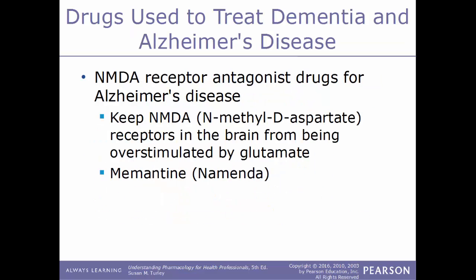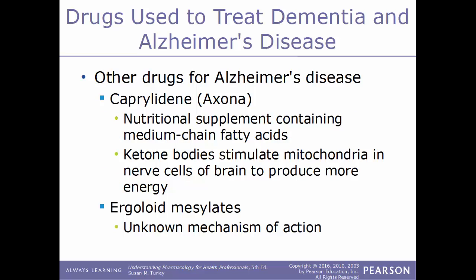Another class used to treat dementia and Alzheimer's are NMDA receptor antagonist drugs. These keep NMDA receptors in the brain from being overstimulated by the amino acid glutamate. An example is memantine (Namenda). Other drugs for Alzheimer's include caprylidene (Axona), a nutritional supplement containing medium-chain fatty acids and ketone bodies that stimulate mitochondria in nerve cells to produce more energy, and ergoloid mesylates, which have an unknown mechanism of action.